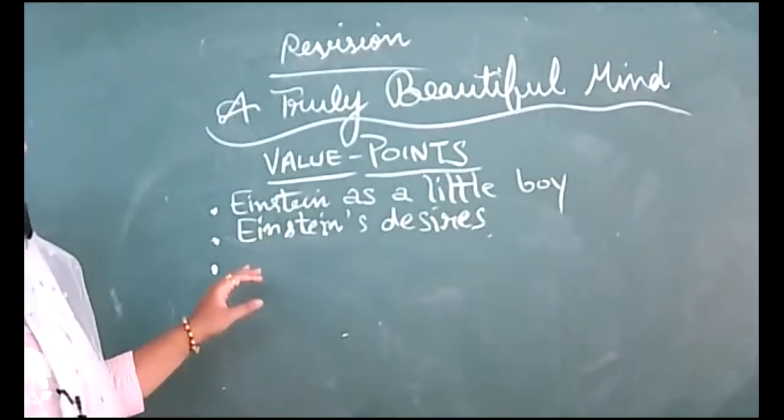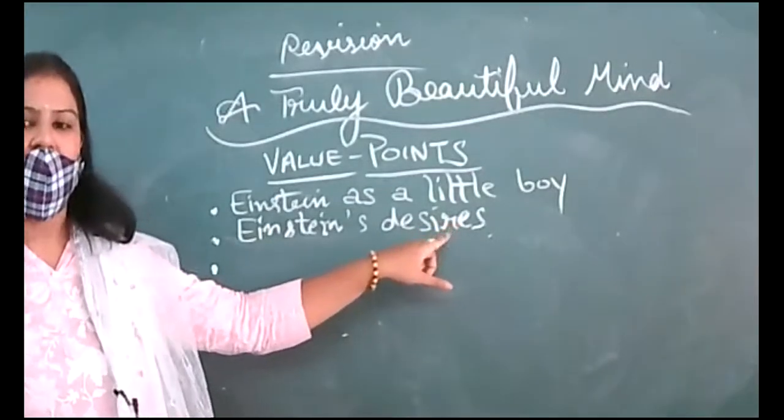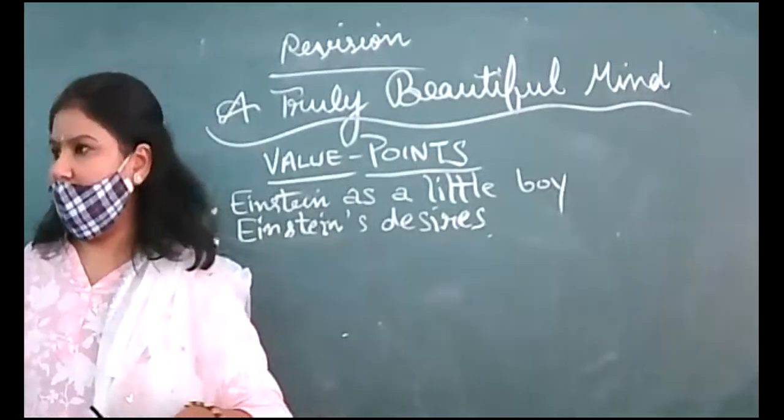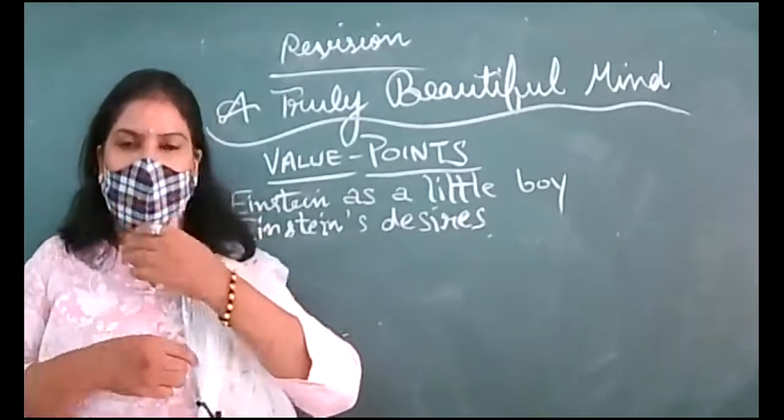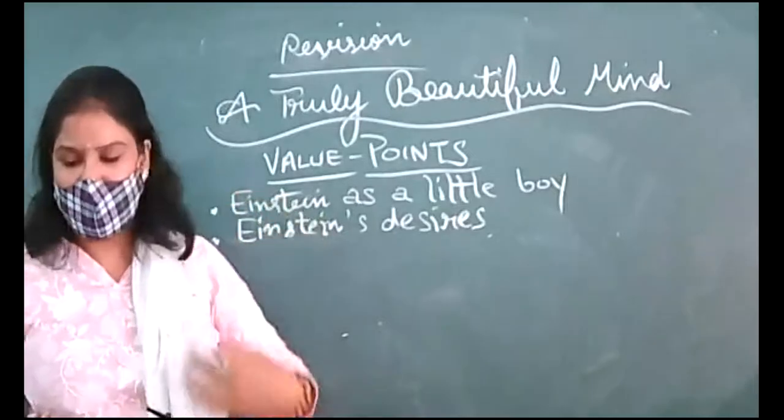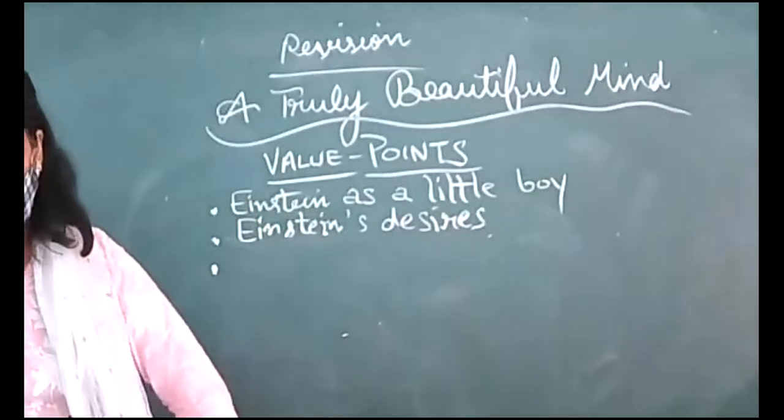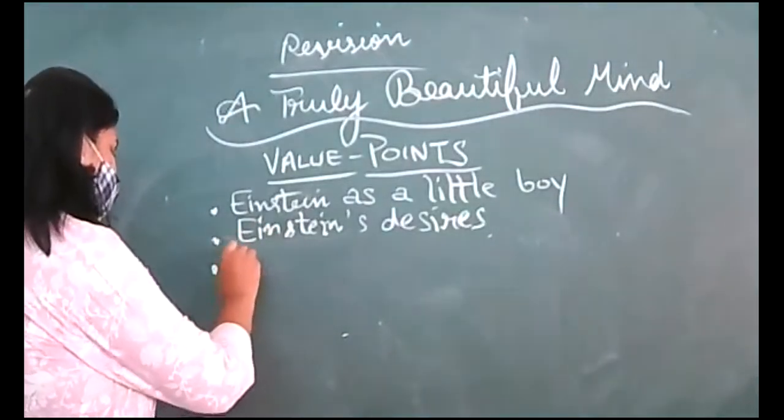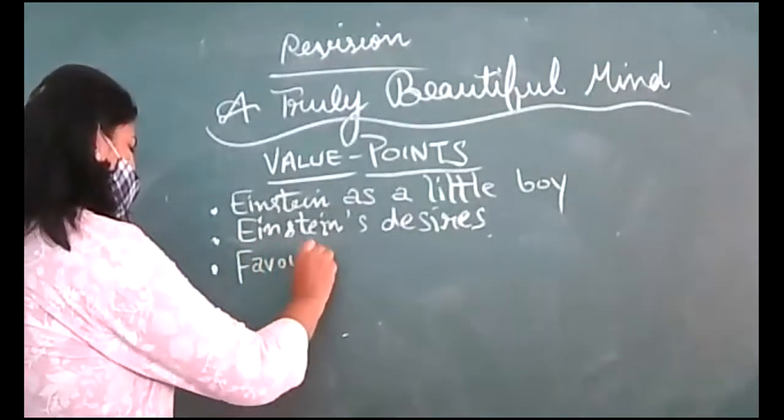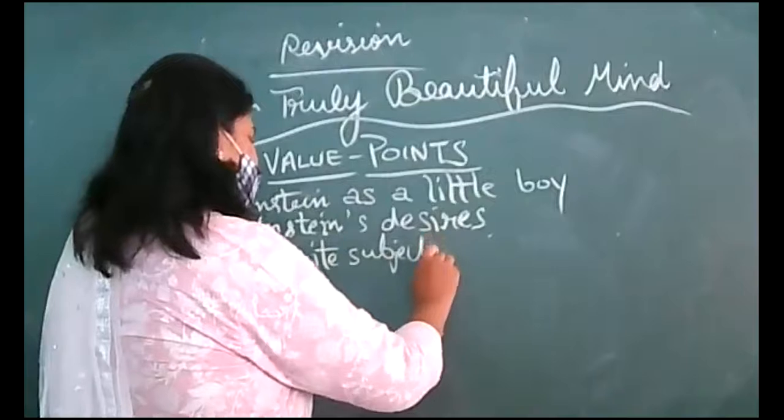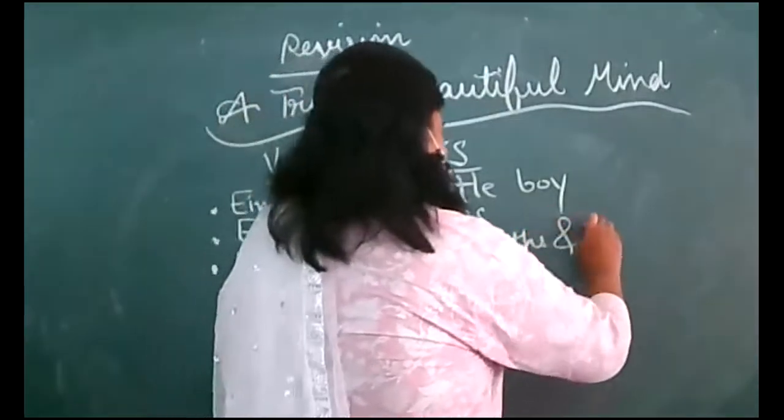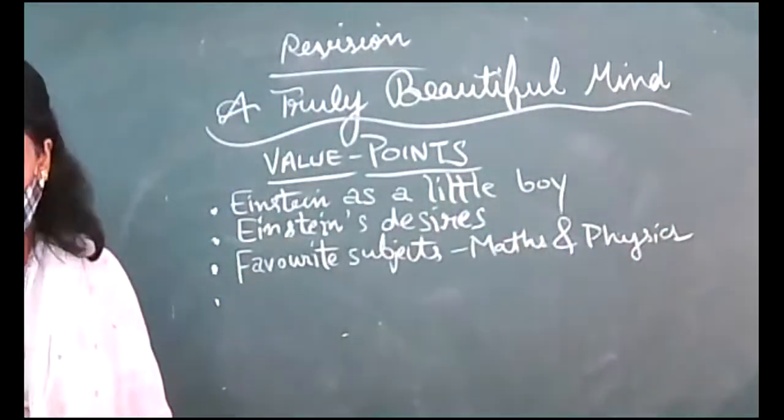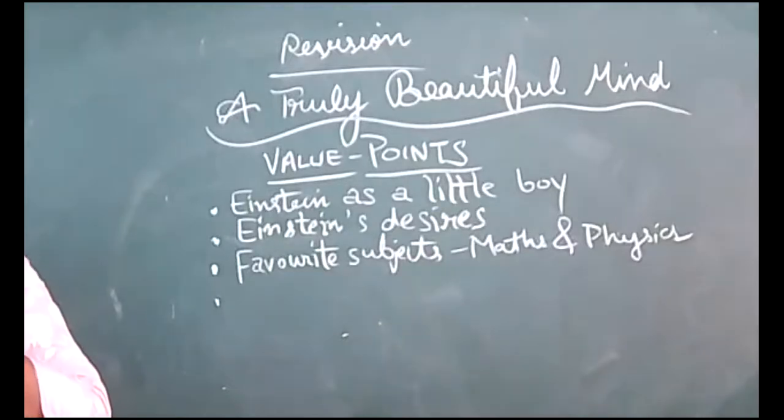He wished to continue his education in Switzerland. So that was his first desire—you can note down: wished to study in Switzerland. Why did he want to move to Switzerland? Because people were very liberal, they were not orthodox, they were not rigid in their thoughts. They were very liberal when it comes to their opinion. He was highly gifted in which subjects? Maths and physics. Favorite subjects—maths and physics.